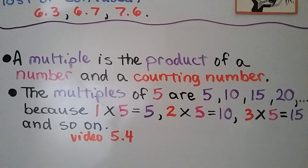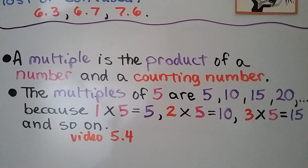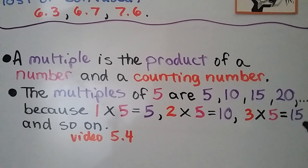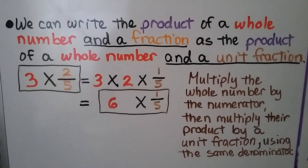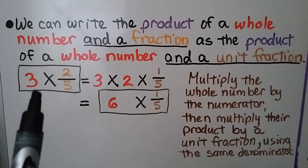A multiple is the product of a number and a counting number. The multiples of 5 are 5, 10, 15, 20, because 1 times 5 is equal to 5, 2 times 5 is equal to 10, 3 times 5 is equal to 15, and so on. We can write the product of a whole number and a fraction.